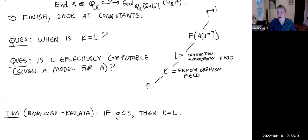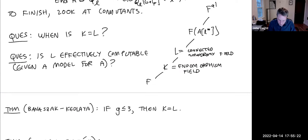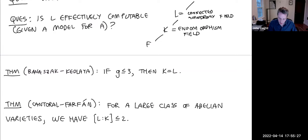I'm excited by this: as a computational arithmetic geometer, there's a lot that works for elliptic curves and abelian surfaces and then breaks for abelian fourfolds. Things like Mumford fourfolds appear, and here we'll also see that the questions about K and L begin to diverge exactly for fourfolds.